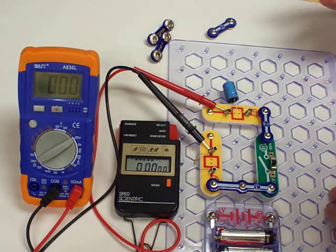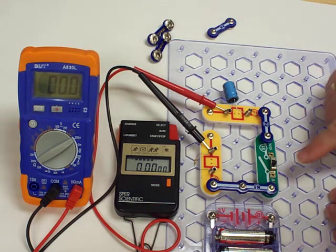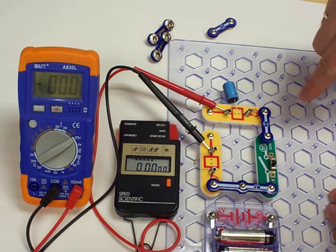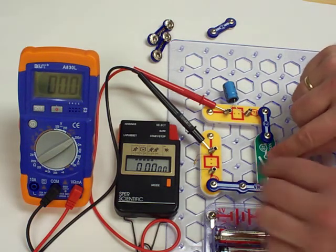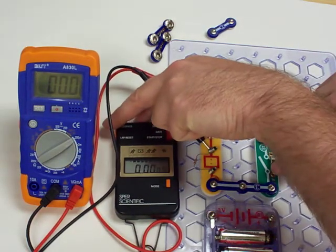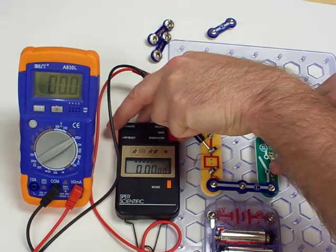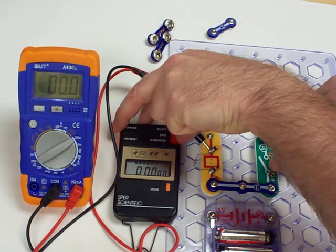So on the discharge, I'm going to do the same thing, turn the switch on, and then the current is going to go from one side of the capacitor to the other, discharging. Okay. Here we go. Again, I'm going to try this at the same time. Ready, set, go.